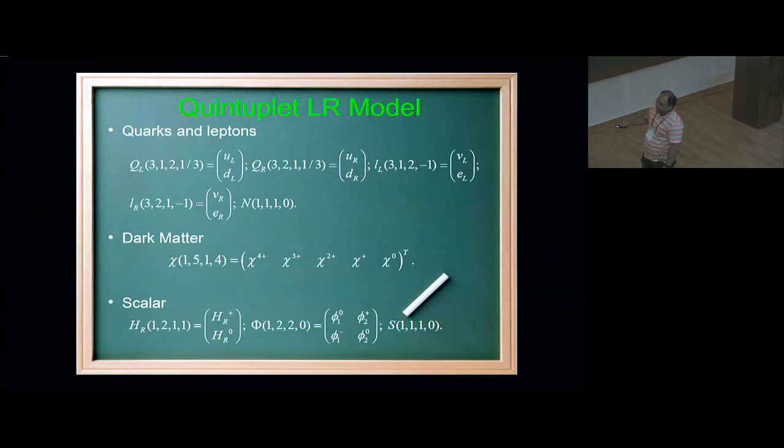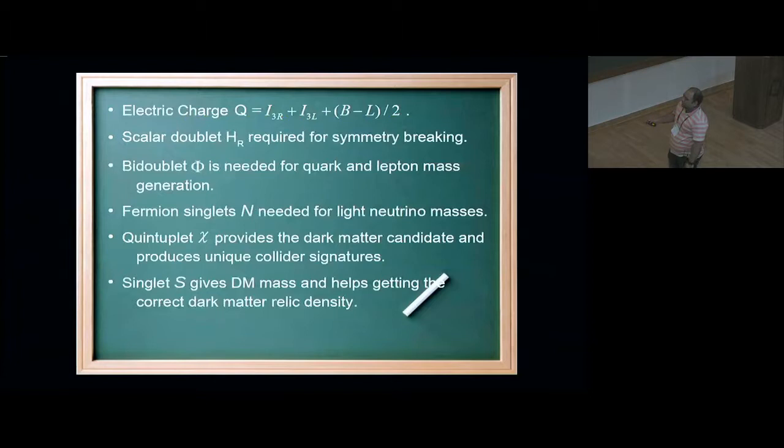My scalar sector consists of a doublet Higgs. This is my right-handed doublet, and it has this neutral field which when it gets a non-zero vacuum expectation value can break my right-handed symmetry. I have this bi-doublet phi, where these two neutral fields, when they get non-zero vevs, will break electroweak symmetry and generate quark and lepton masses and CKM mixing. And I have this singlet S, which gives mass to this chi field, and it also helps in getting low mass dark matter for the correct relic density.